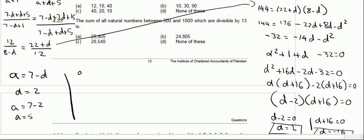Or if d equals minus 16, then a equals 7 minus (minus 16) which is 23.